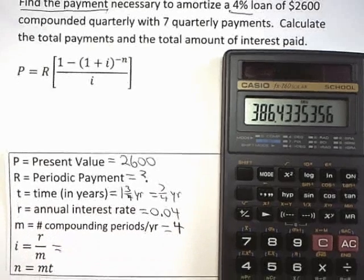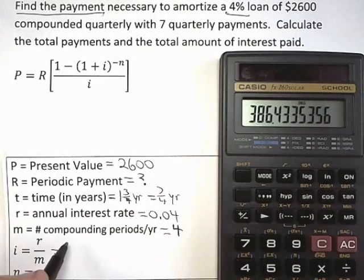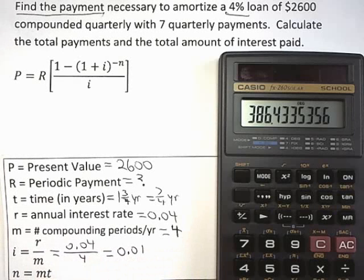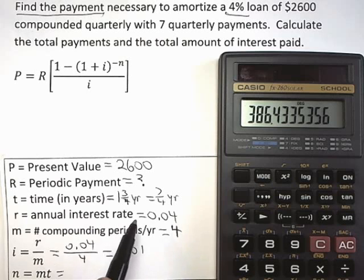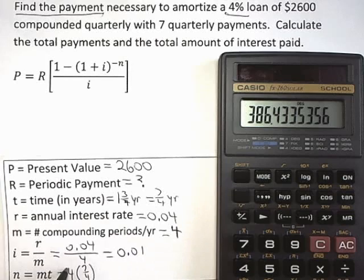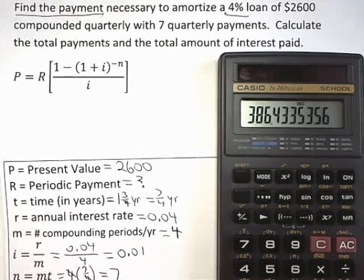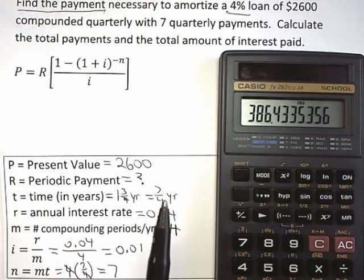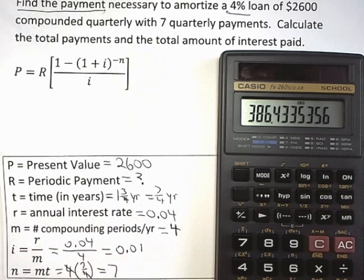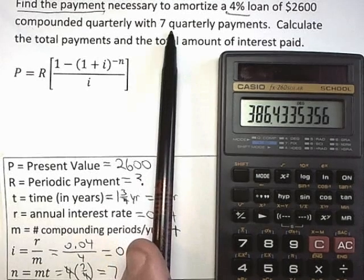Little i is little r over m, so that would be 0.04 divided by 4. You could probably do that in your head. If not, you can do it in the calculator. You get 0.01. And little n, this is why I said you didn't need t to start with. If you take m, which is four, and multiply it by t, which is seven fourths, the four is canceling. You just get seven. So what we've just discovered, even if it's belatedly, is that they gave us n to start with. So we really didn't need t. We needed m for another reason to calculate little i, but we didn't really even need t because they gave us n directly in the original statement of the problem.